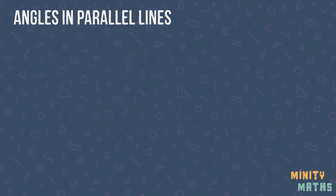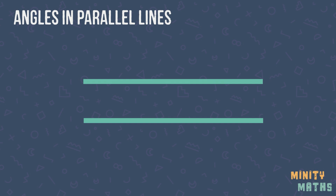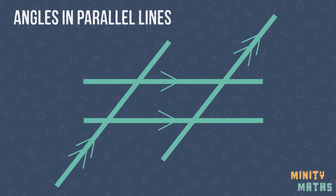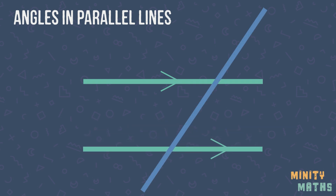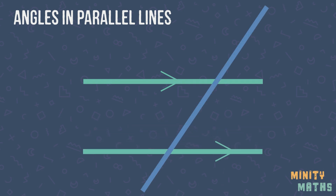Parallel lines are lines which run alongside each other and will never intersect. Parallel lines will usually be indicated by arrows on the lines. If there is more than one pair of parallel lines, then these will be indicated with more than one arrow. When a line crosses two parallel lines, special angles are formed which have particular names and properties.